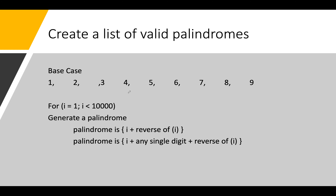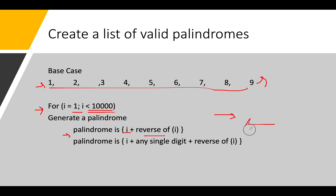For the base case, numbers from 1 up to 9 are part of the palindromic list and we'll add them upfront. For the next numbers, we'll start an iteration from i equals 1 up to i equals 10,000 — I'll explain in the coding section why 10,000. We generate palindromic numbers using i plus the reverse of i, because a palindromic number reads the same left to right and right to left.